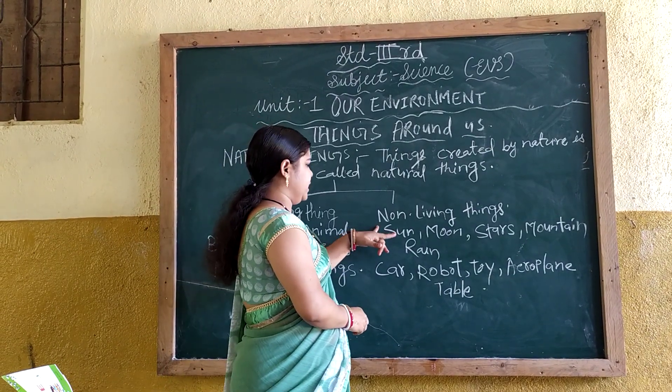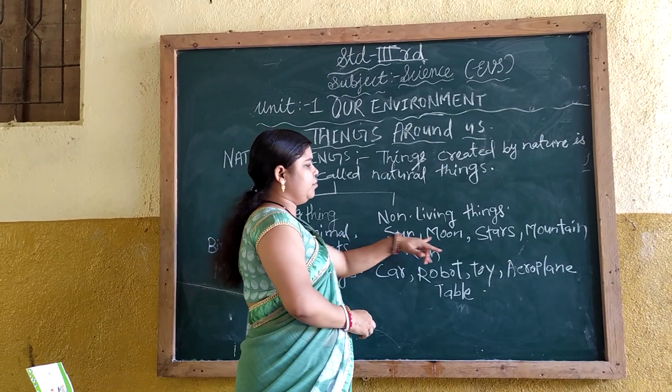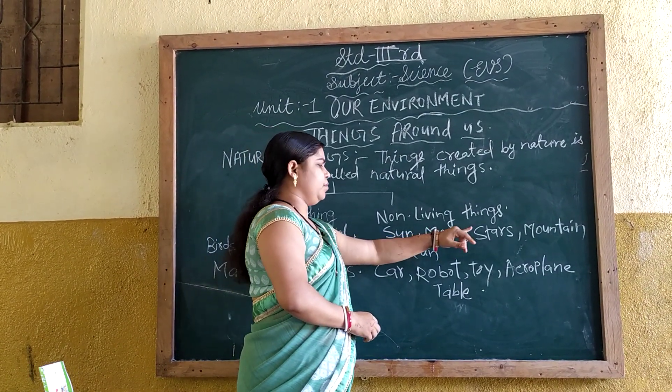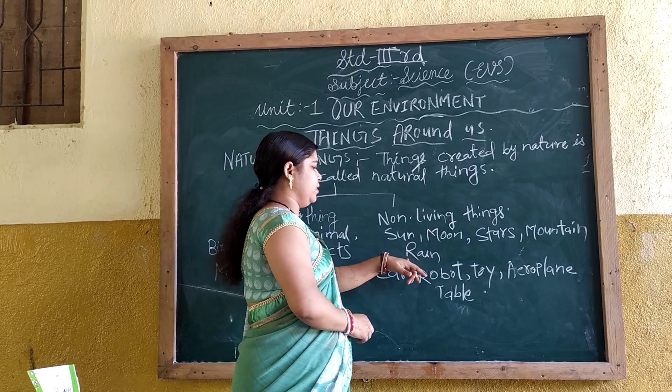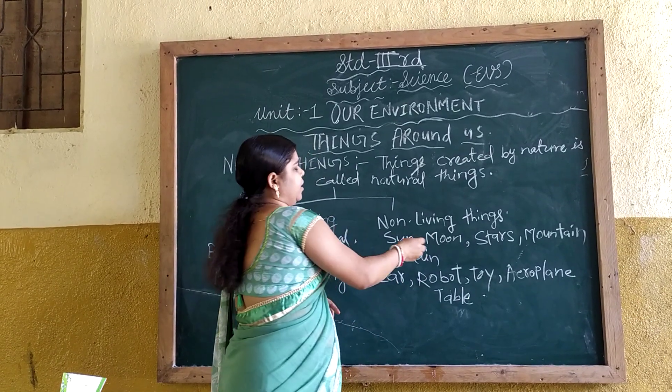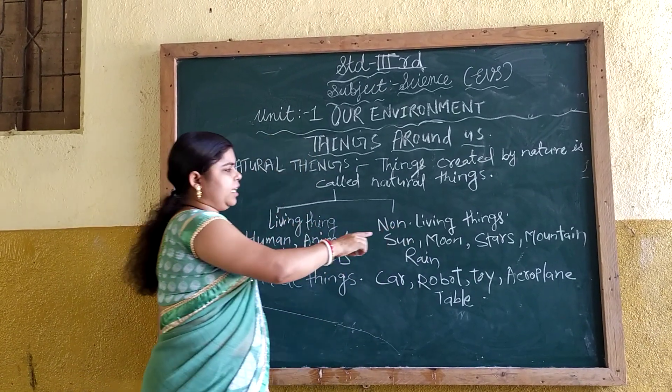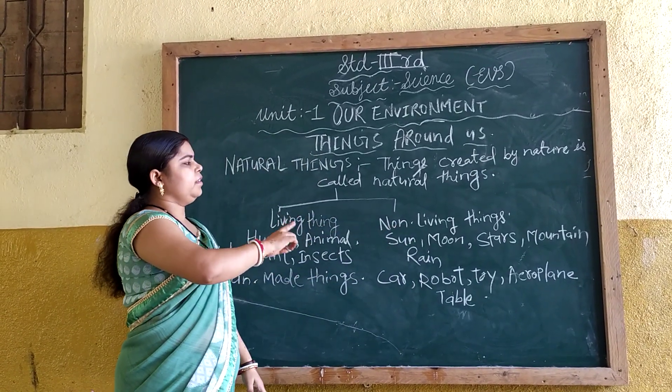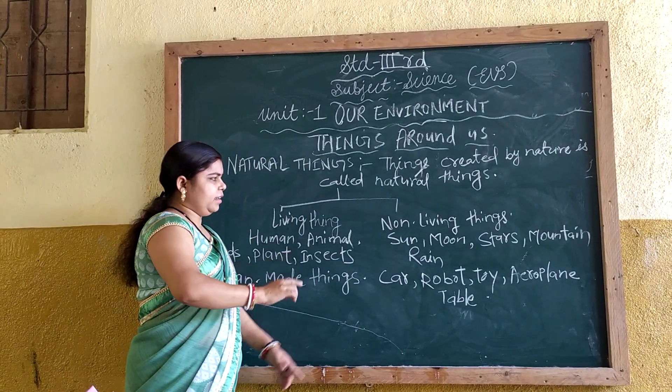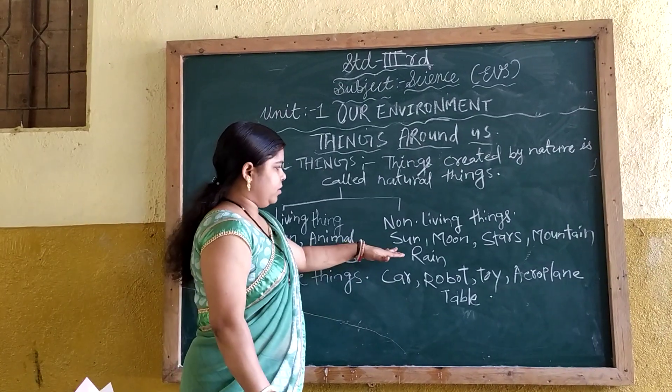Examples of non-living things are: the sun, moon, stars, mountains, and rain. These are part of our environment and are necessary for living things to survive.